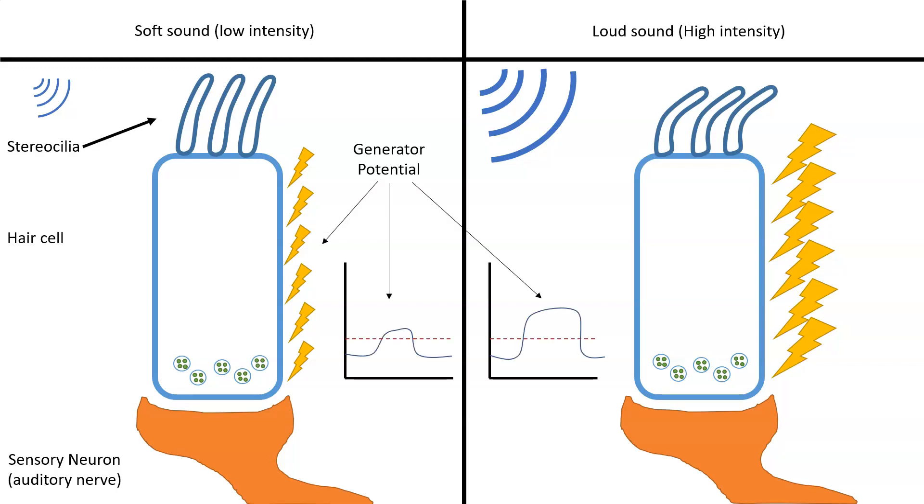Here is a graph showing both generator potentials. Notice that they have different amplitudes and they are directly related to the intensity of our stimulus. As such, these generator potentials are considered graded. Let's continue to see what happens downstream of this.